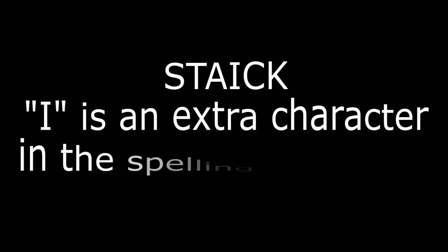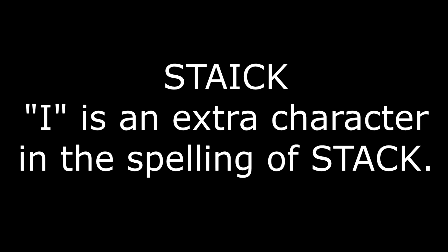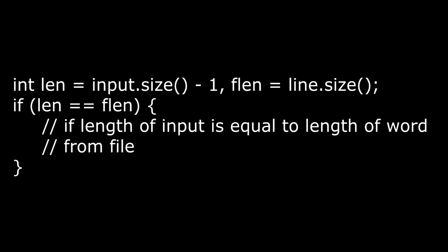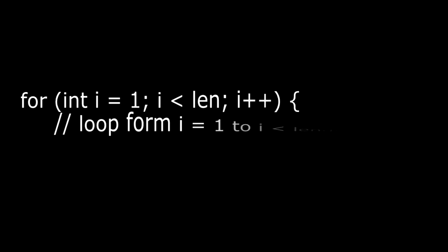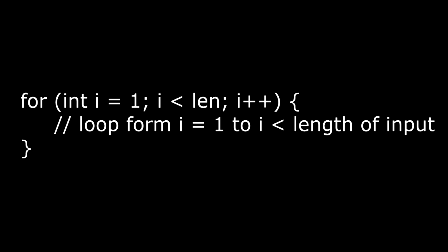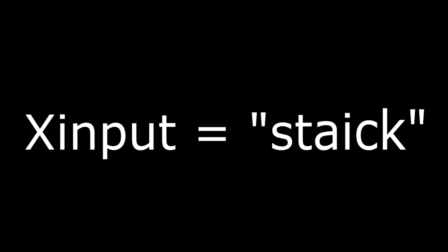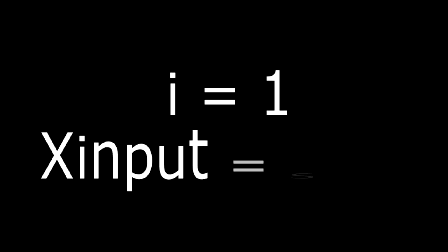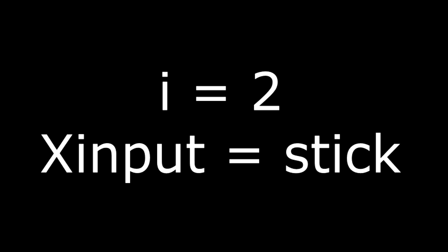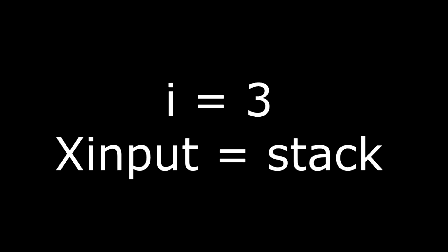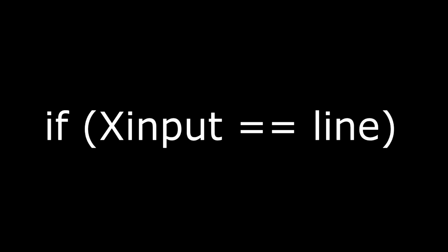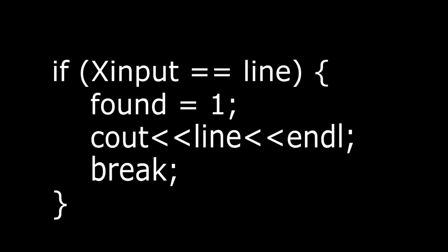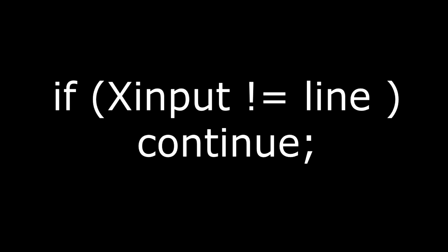Type 2: extra character. In this type of mistake there is an extra character or alphabet in the word entered by the user. For example, if the user enters the spelling of 'stack' as 'staick', then 'i' is an extra alphabet. We can solve this type of problem as follows: first check if the length of input minus one is equal to the word from the file. If equal, start a loop from i equals one to i less than the length of input. Remove the i-th character from the string — for example, at i equals three, input becomes 'stack'. After removing the i-th character, compare it with the word from the file. If both strings are equal, print the word from the file and make found equal to one, then break all loops. If strings are not equal, keep checking. At the end, return the value of found.